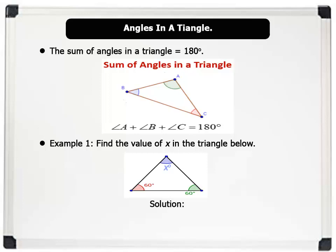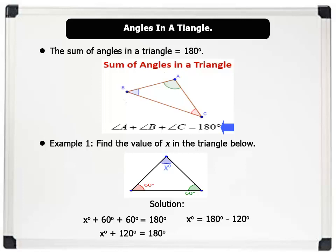Solution: remember that the sum of angles in a triangle equals 180 degrees. So x plus 60 plus 60 equals 180. This gives x plus 120 equals 180, therefore x equals 180 minus 120, so x equals 60 degrees. That's brilliant!